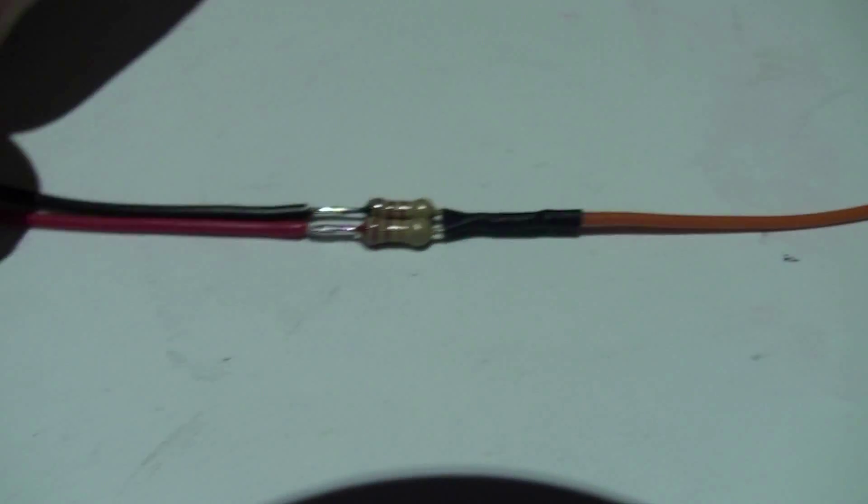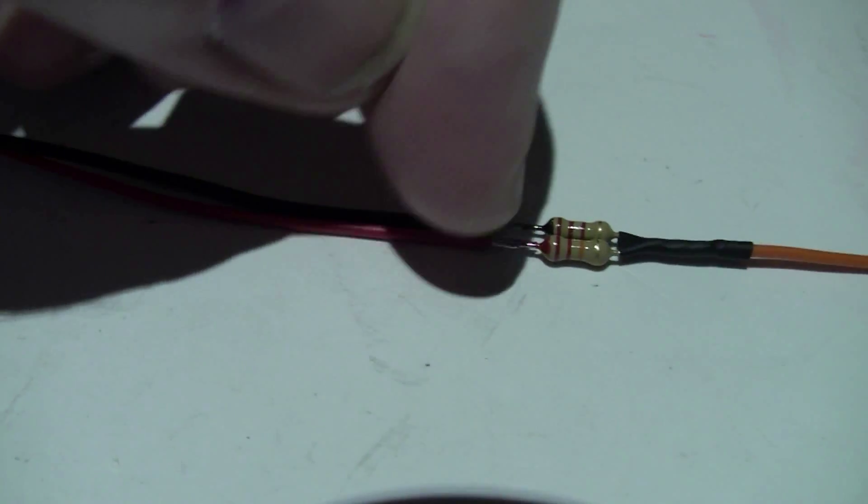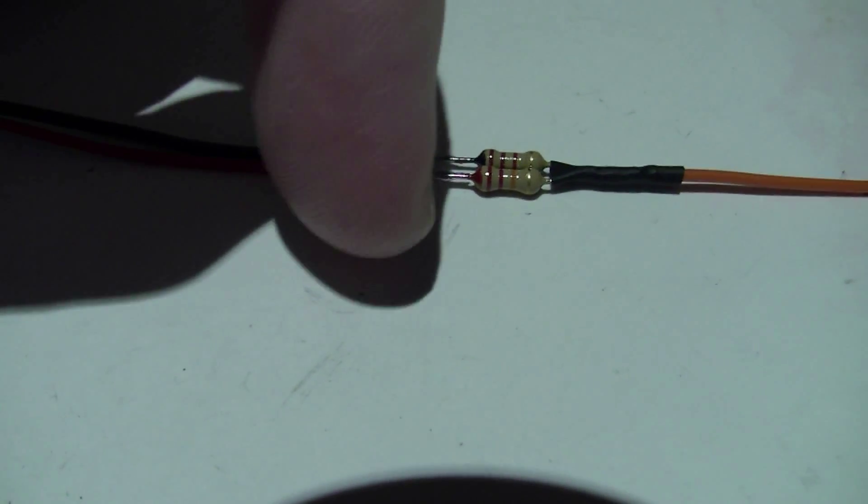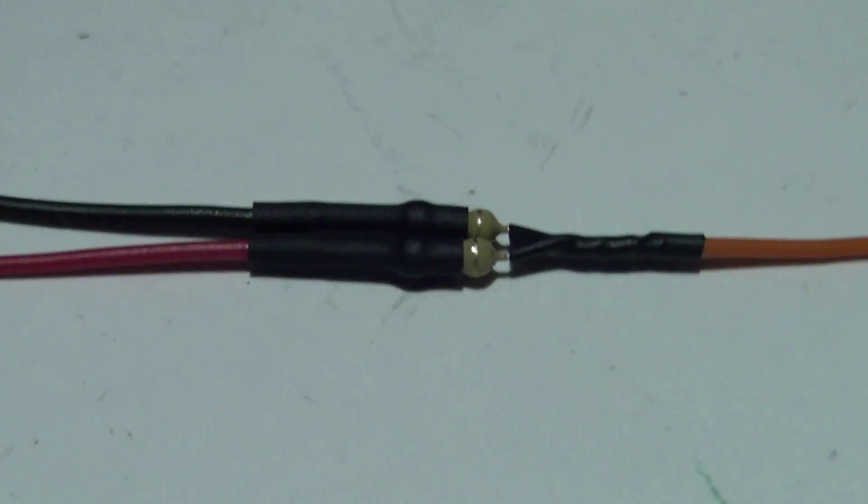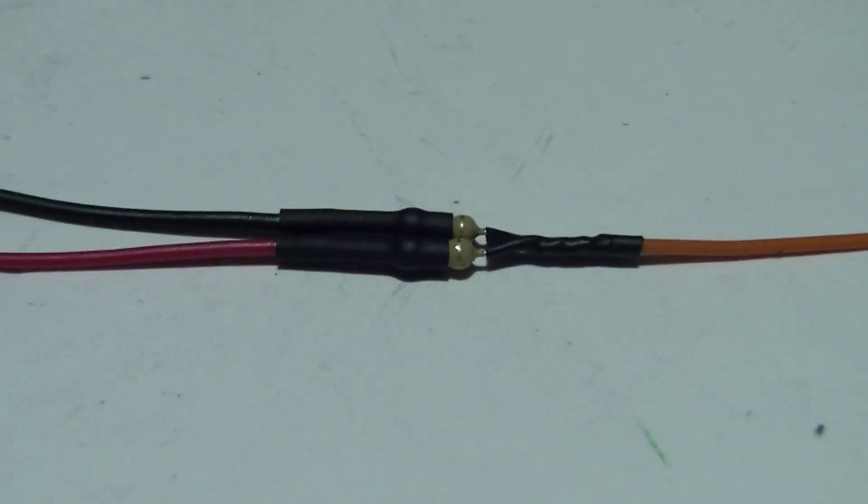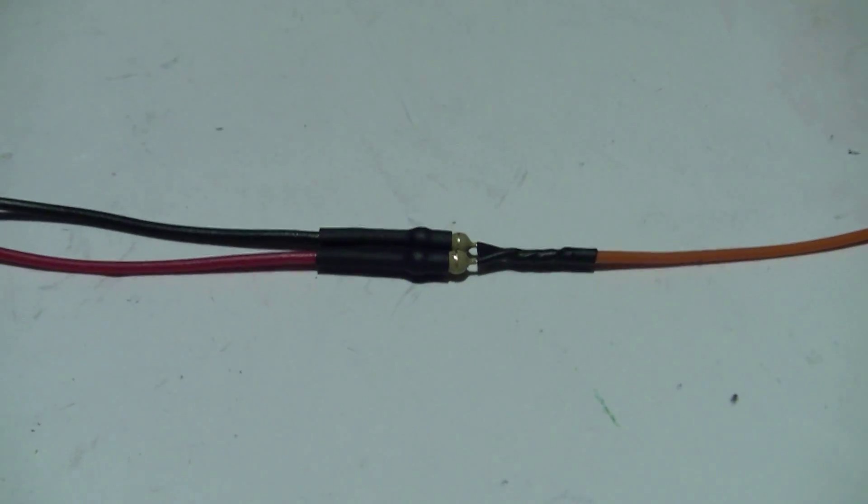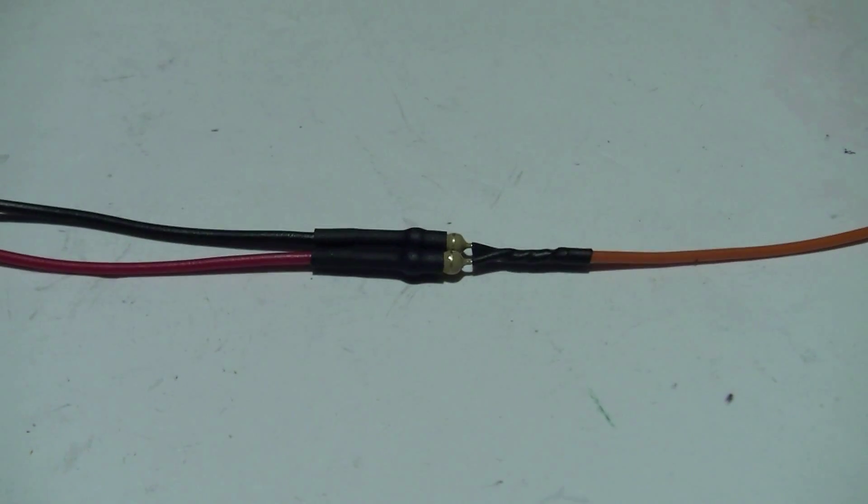Right, so I've soldered the positive and negative on there. Now the next thing to do is obviously you've got to insulate these very well. What I'm going to do is heat shrink the whole lot just to completely insulate it from absolutely anything.